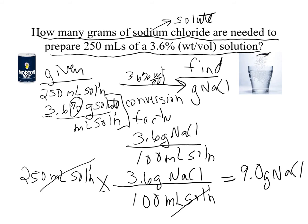Accounting for significant figures: we have 250 and 3.6. Since 3.6 has 2 significant figures, the final answer should have 2 sig figs — which is why we write 9.0 grams.